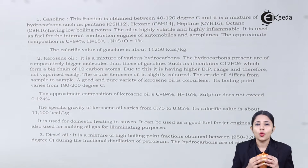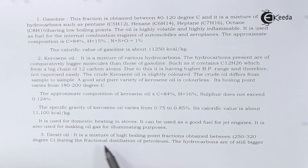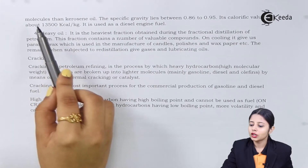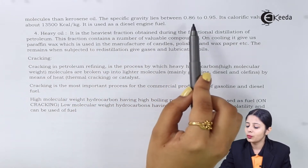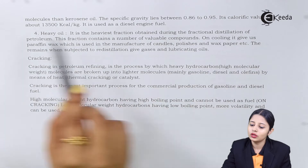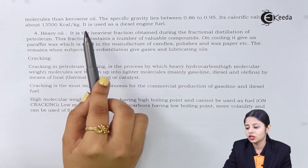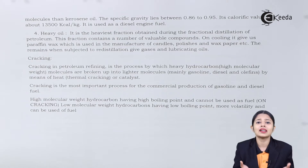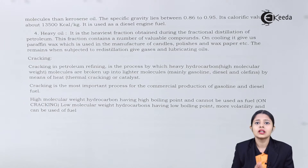The third fraction is diesel oil — a mixture of high boiling point fractions obtained between 250 to 320 degrees Celsius during fractional distillation of petroleum. The hydrocarbons are of still bigger molecules than kerosene. The specific gravity lies between 0.86 to 0.95. Its calorific value is about 13,500 kilocalories per kg. It is used as diesel engine fuel for transportation, and because of its high calorific value it helps engines to start and run for a long period of time.